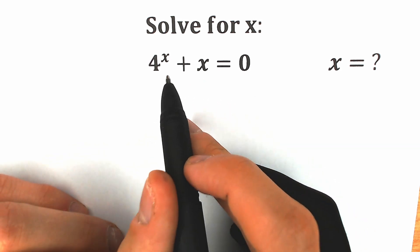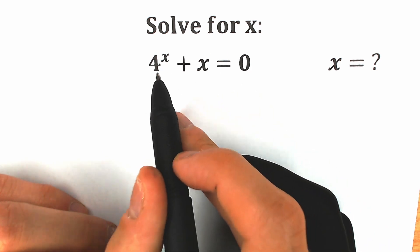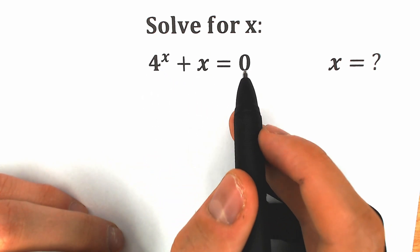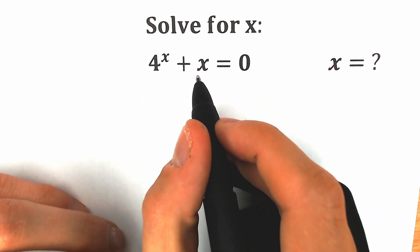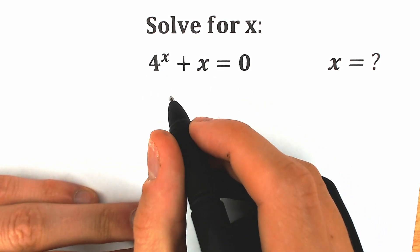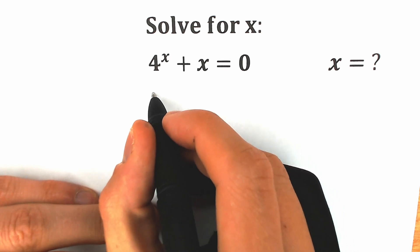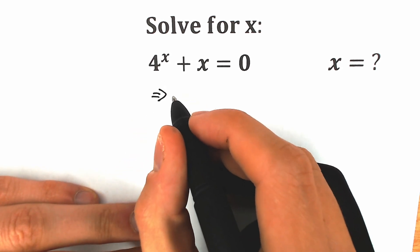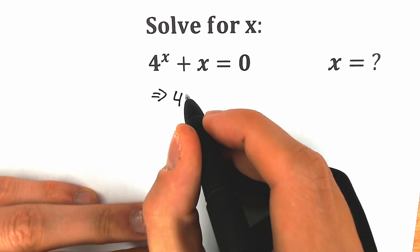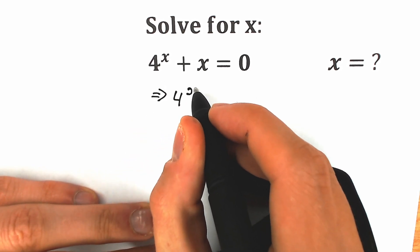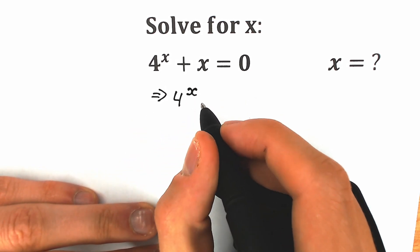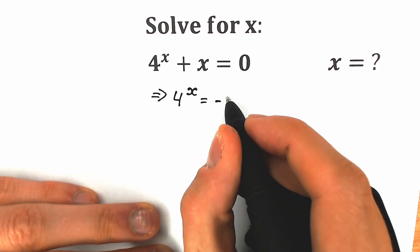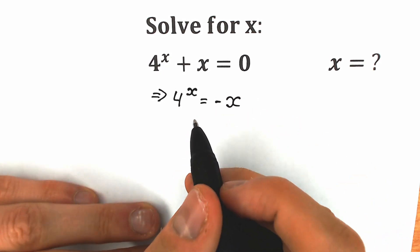So how can we solve this question? We have the exponential equation 4 to the x plus x equal to 0. First of all, let's bring the x from our left side to the right side. As a result, on the left side we still have 4 to the power x, and on the right side we have not x but minus x. Right now let's look closely in terms of geometry.